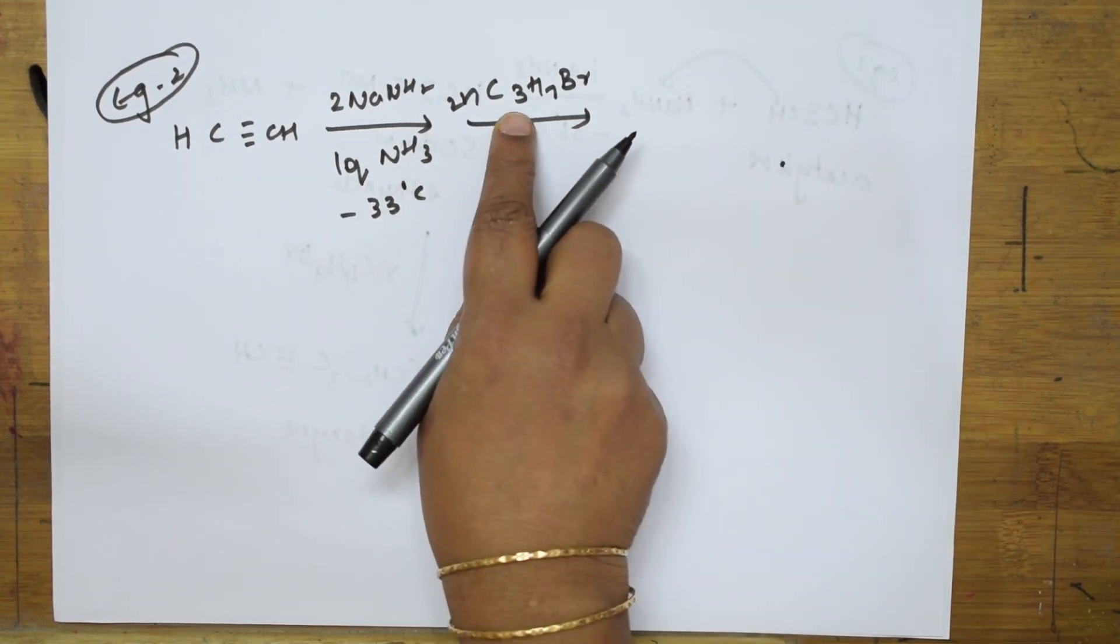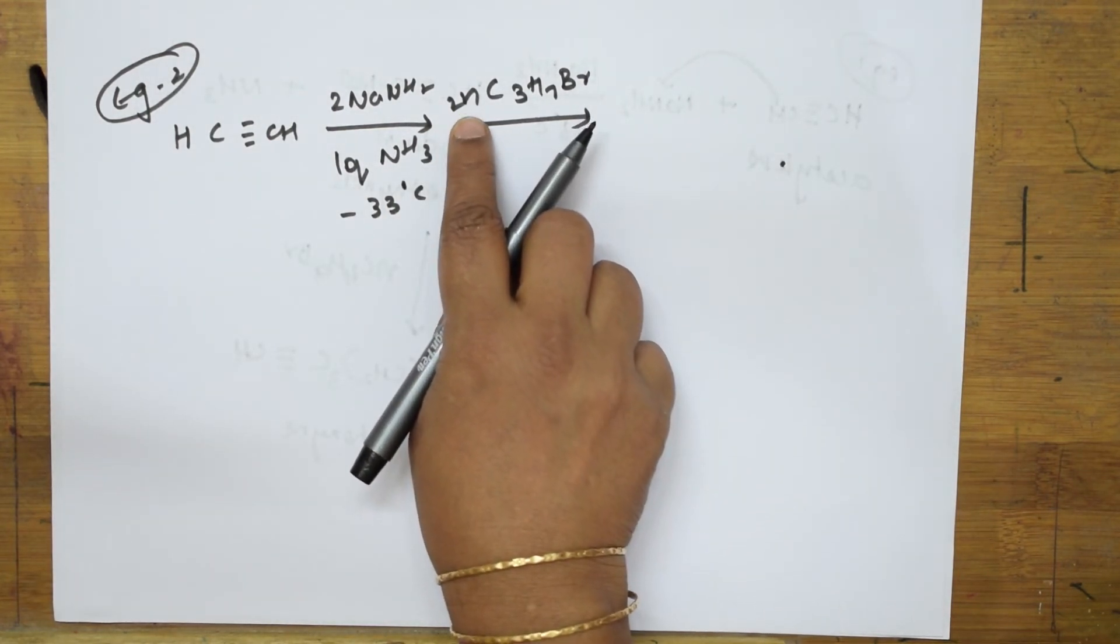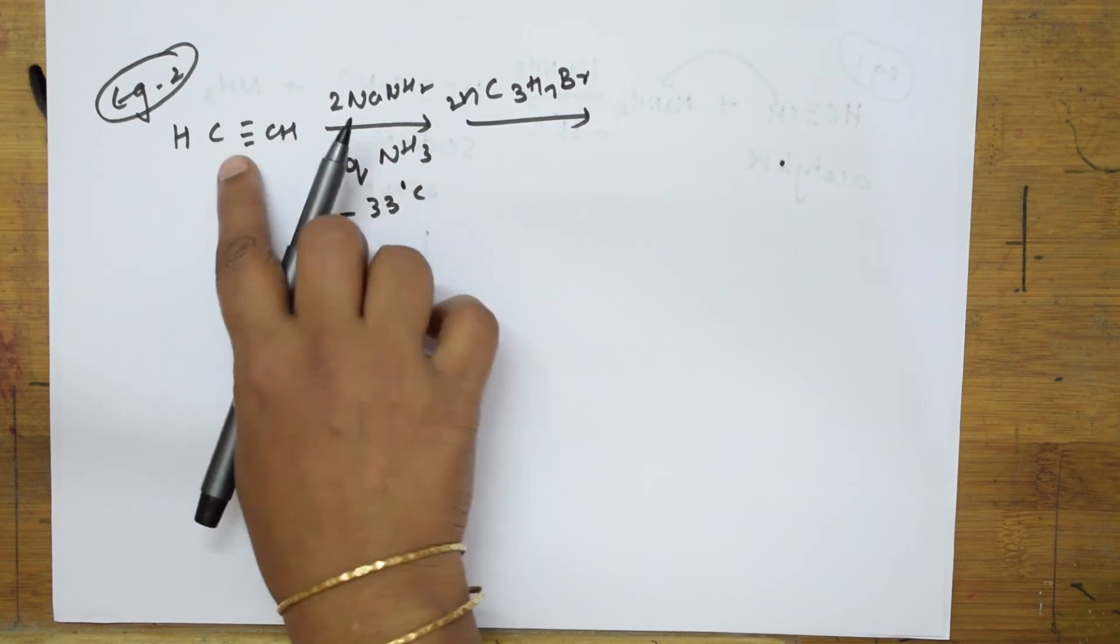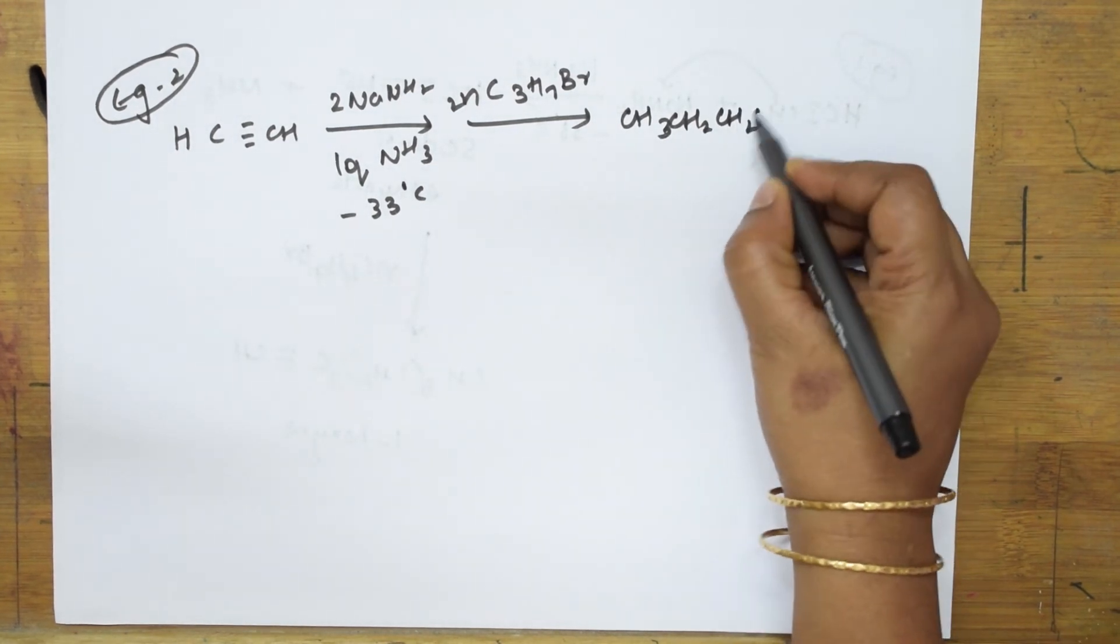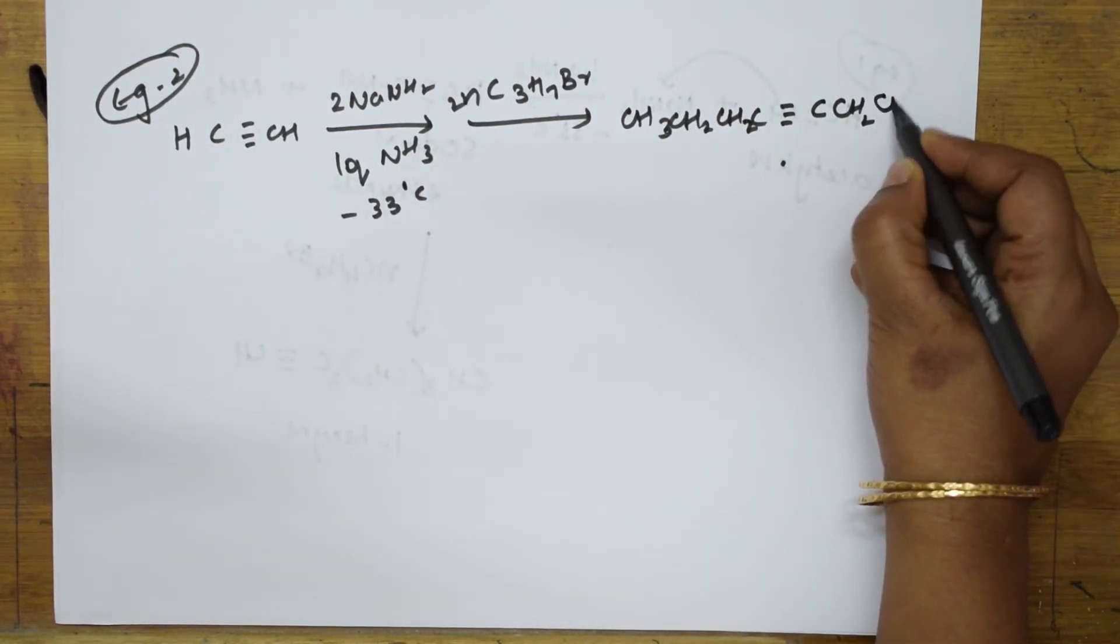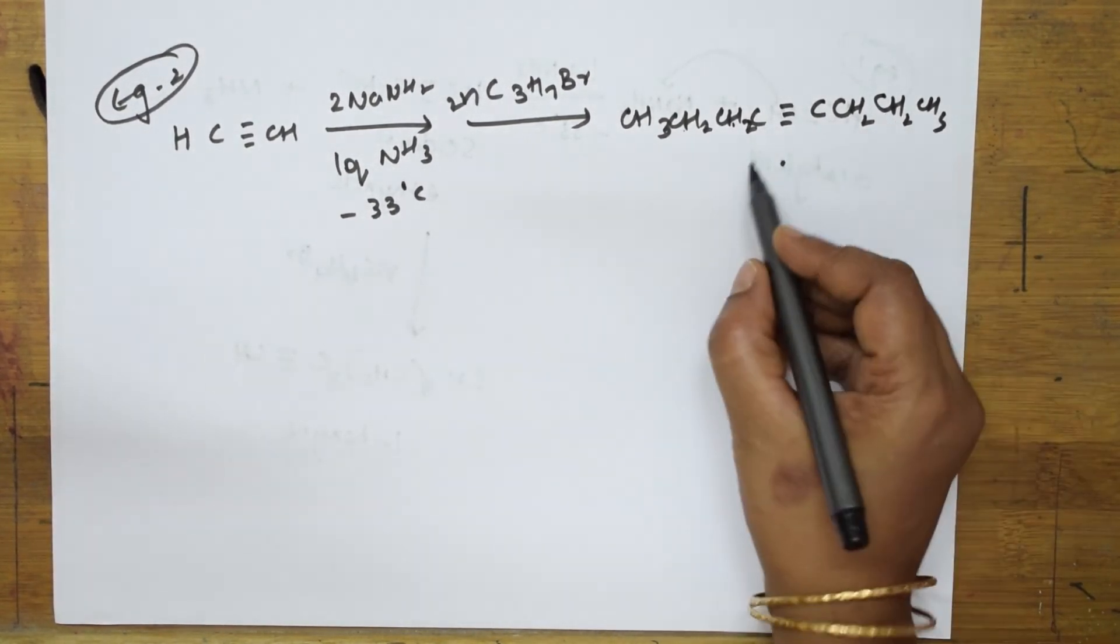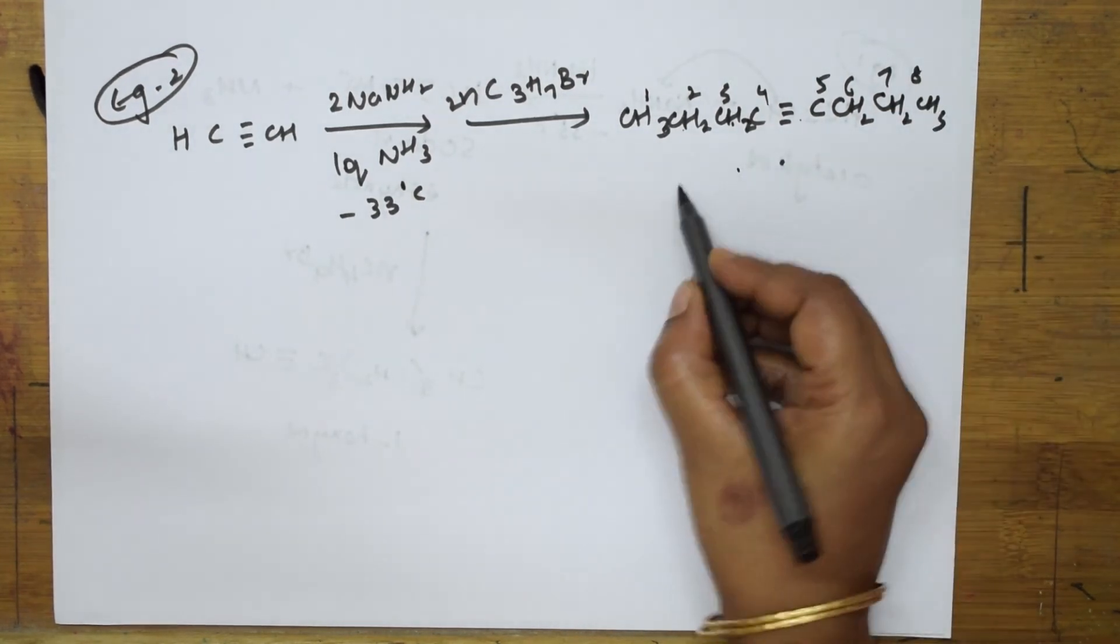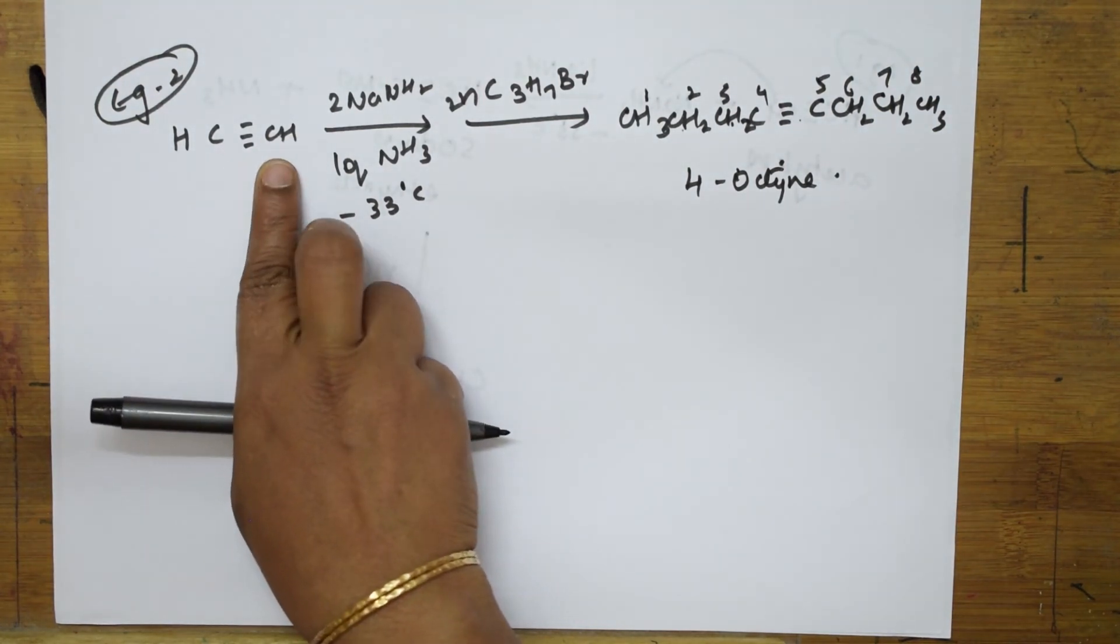This is 3, this is 4, this is 5. But I've taken 2 moles here, so it becomes double. It becomes 3 times 2 is 6. 3 times 2 is 6 and 7, 8 - I'll get octyne. So the product formed is CH3-CH2-C≡C-CH2-CH3.